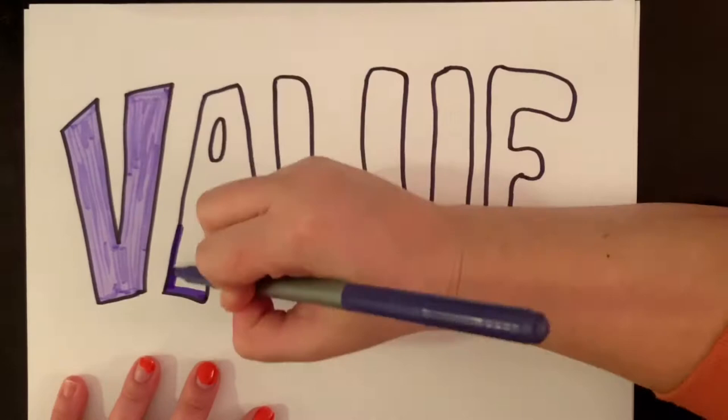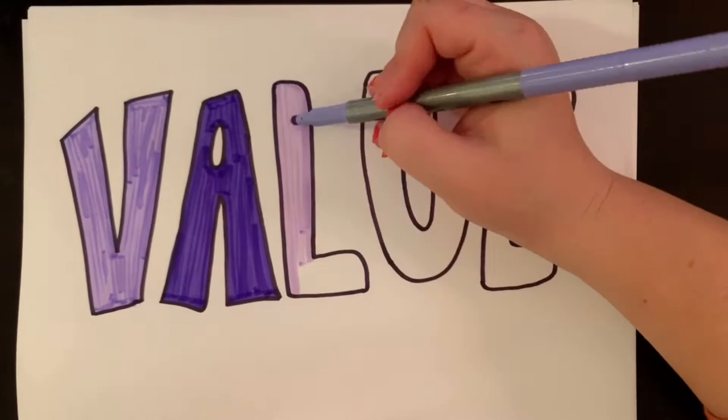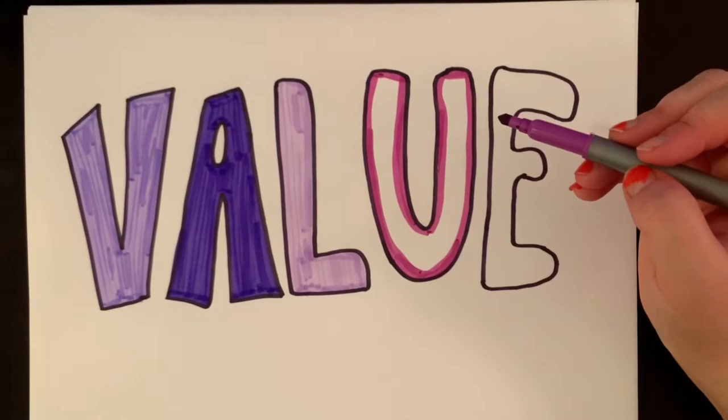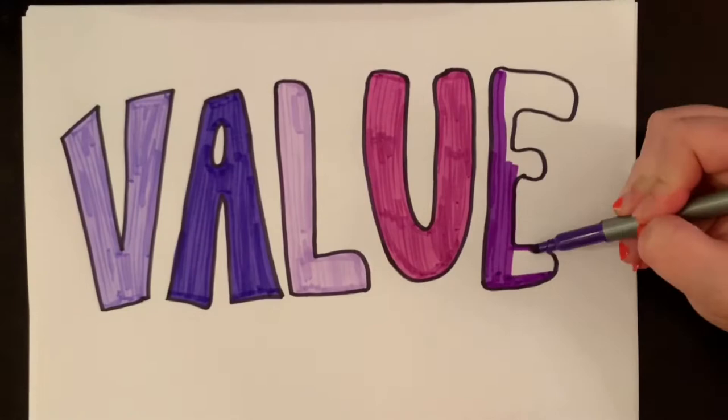When I talk about values of a color, I mean the lightness and darkness of a color. So although each one of these is a purple, it is either a light purple, a dark purple, a medium purple. It all is based off the amount of white or black added to that color.